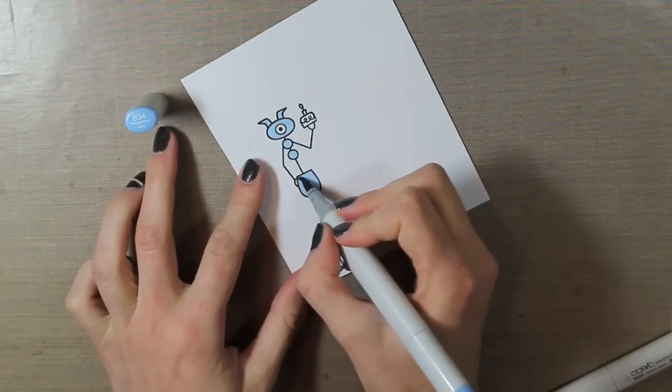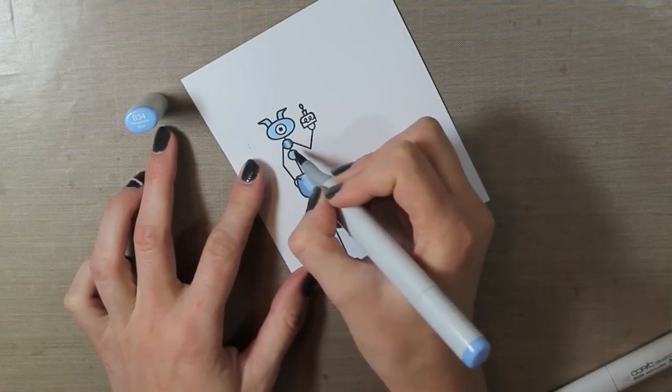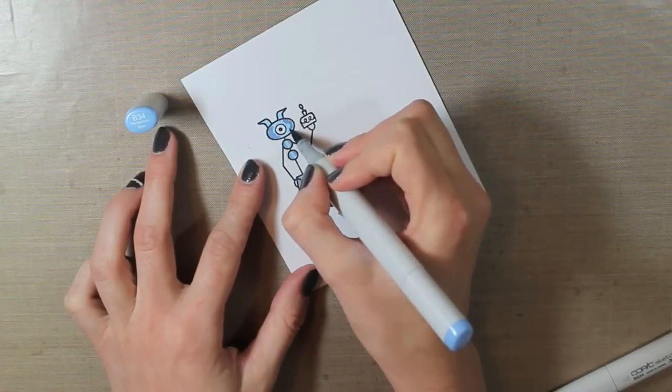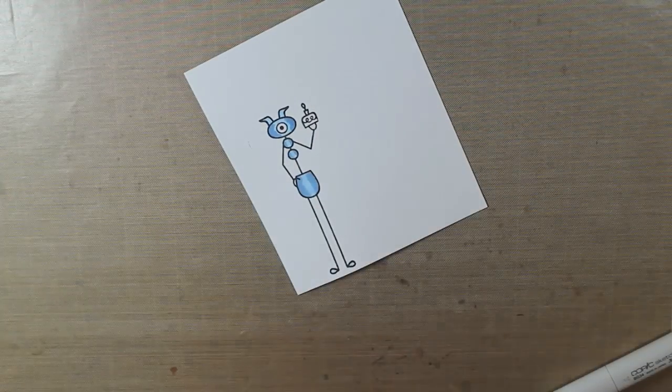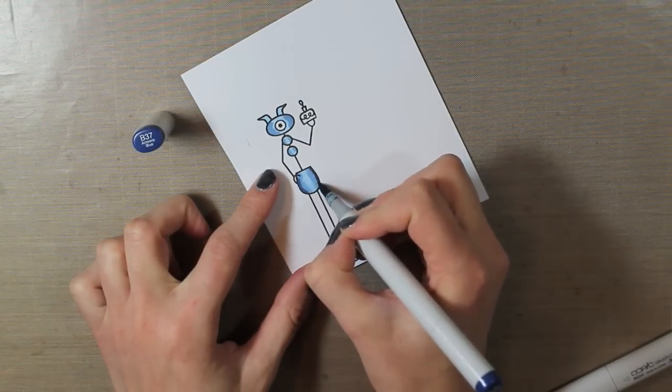And then I'll add in my darker color, which is the B34. And then I'm going to add a little bit darker color with my B37. It's just going to add a little bit more shading to the edges of this cute little monster.